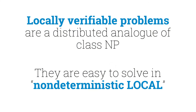Usually constraint satisfaction problems are locally verifiable. Problems in which you need to find some kind of local optimum or a game-theoretic equilibrium are often locally verifiable. But optimization problems are usually not locally verifiable. In a sense, locally verifiable problems are the distributed analog of class NP — or more precisely, the distributed analog of class co-NP. If you have a locally verifiable problem, you can solve it efficiently in the non-deterministic local model: each node non-deterministically guesses its own part of the solution, and then the nodes can verify the solution in constant time. Just as the study of NP plays a big role in classic computational complexity theory, we'd expect locally verifiable problems to play a big role in distributed complexity theory.